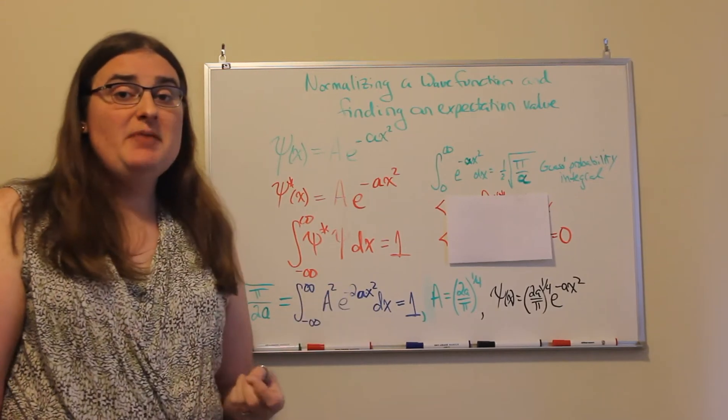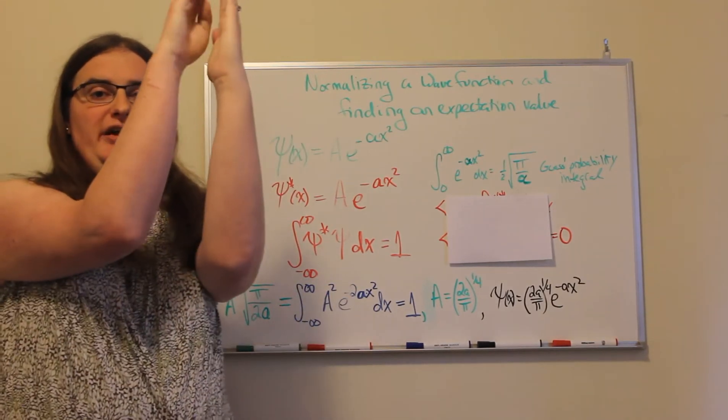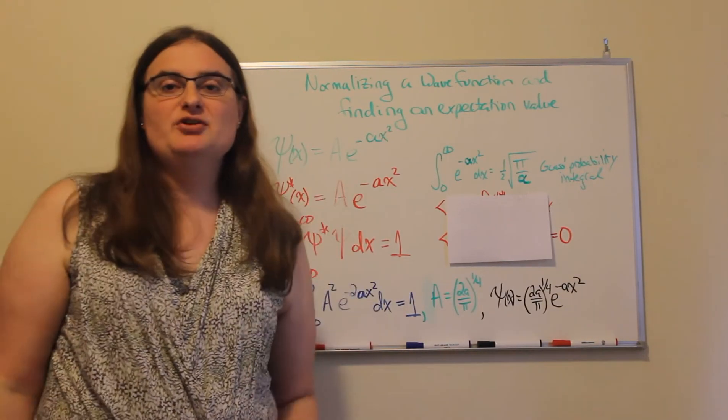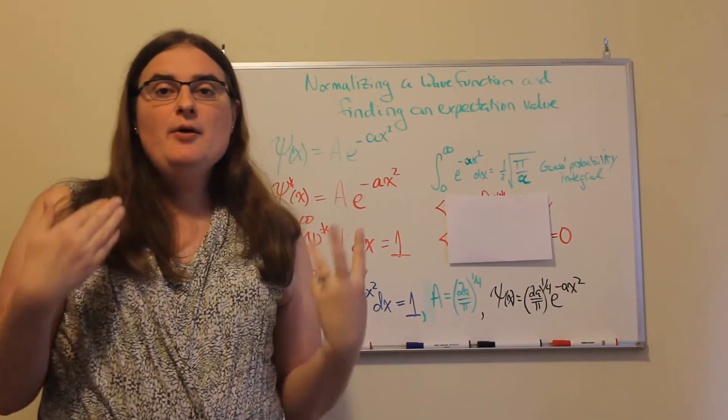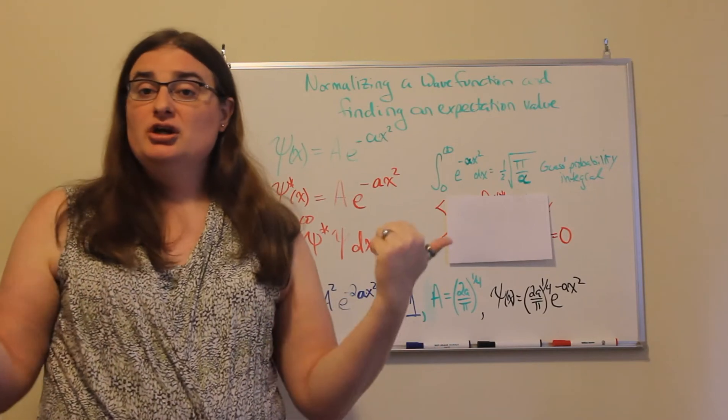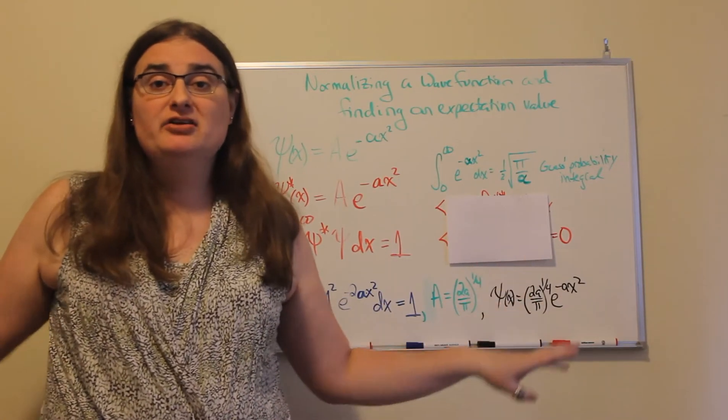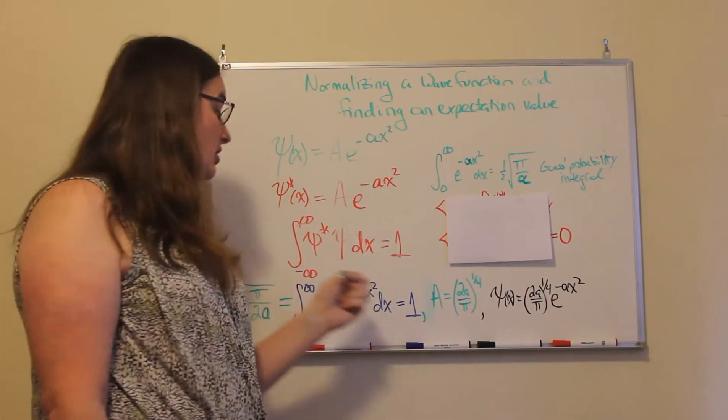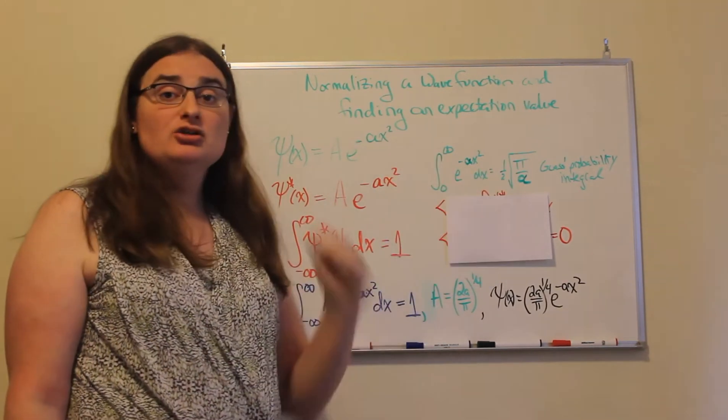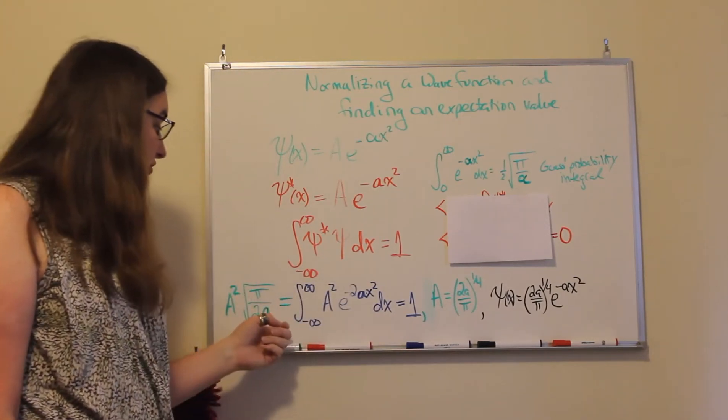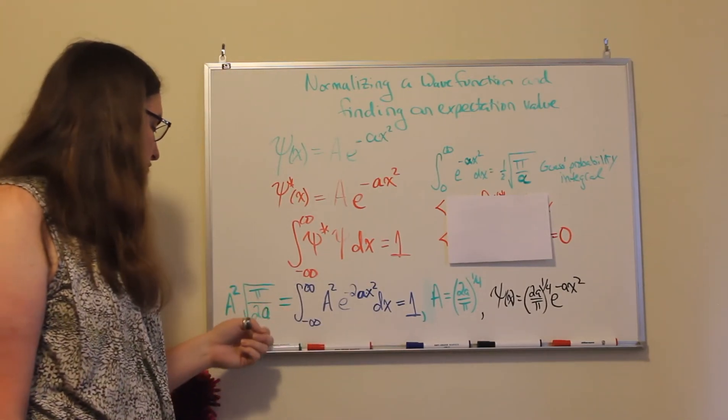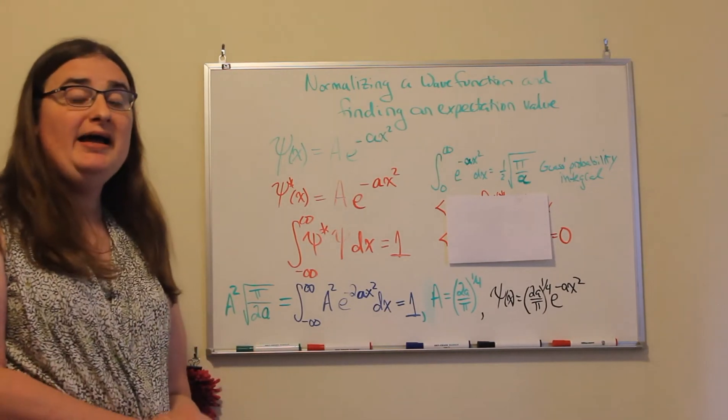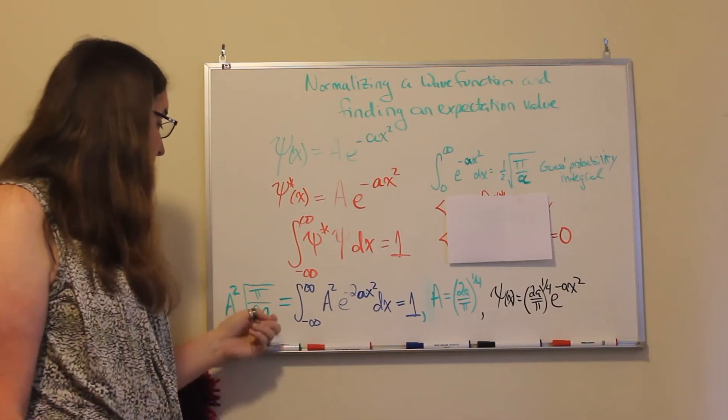...our function is symmetric if we take a look at the behavior towards positive infinity compared to the behavior towards negative infinity. Both of those limits should behave and look exactly the same. So if we look at half the integral, our total integral would just be twice that. So our integral is going to be equal to a squared times the square root of pi divided by 2 times little a.